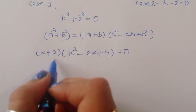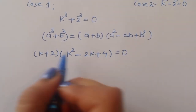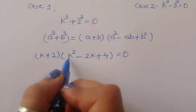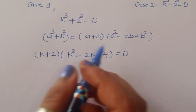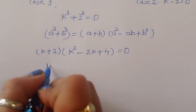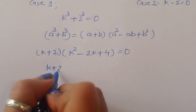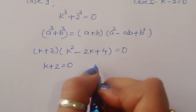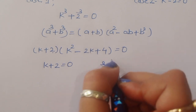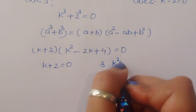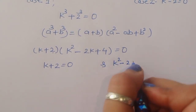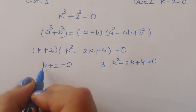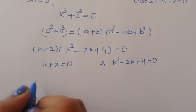From Case 1 we get two equations: k plus 2 equals 0, and k squared minus 2k plus 4 equals 0. From the first equation, k plus 2 equals 0, therefore k equals minus 2.